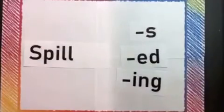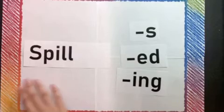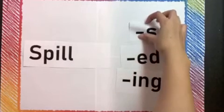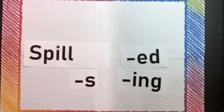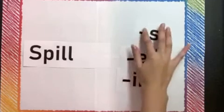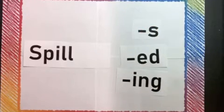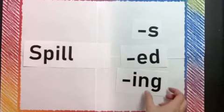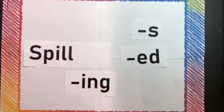Now our next word is spill. How will we put spill in plural form, meaning more than one? We would add the S. So now we would have: there are multiple spills — that means we have more than one spill. Now what if we want to see spill in present tense, meaning happening now? Which ending will we be using — ED or ING? ING is right, friends. So now we have spilling. The dog is spilling his food. Great job, friends.